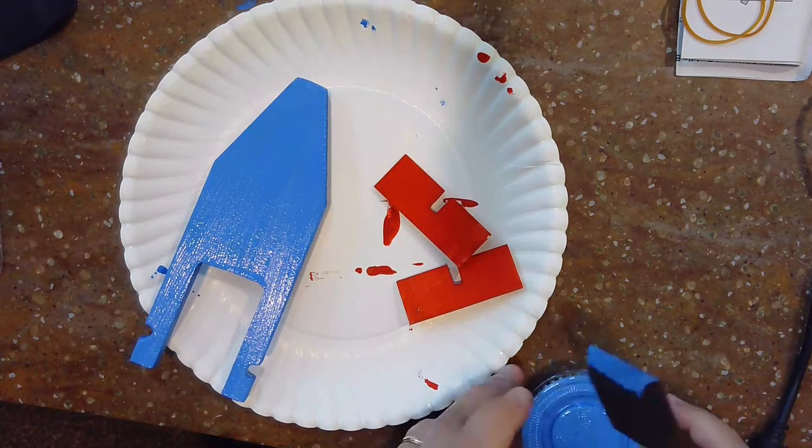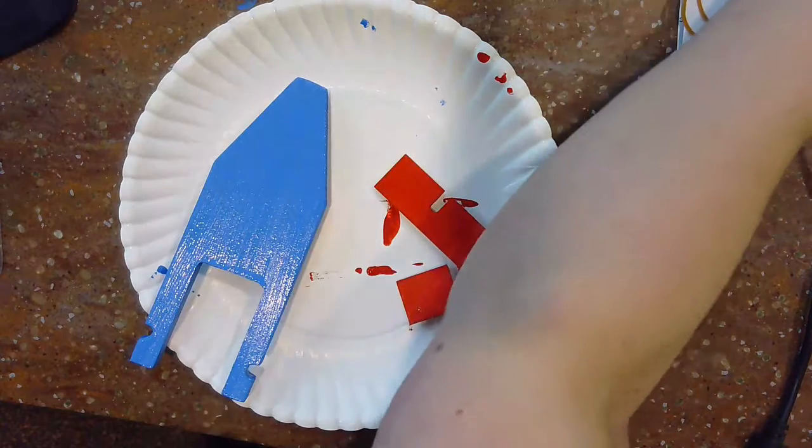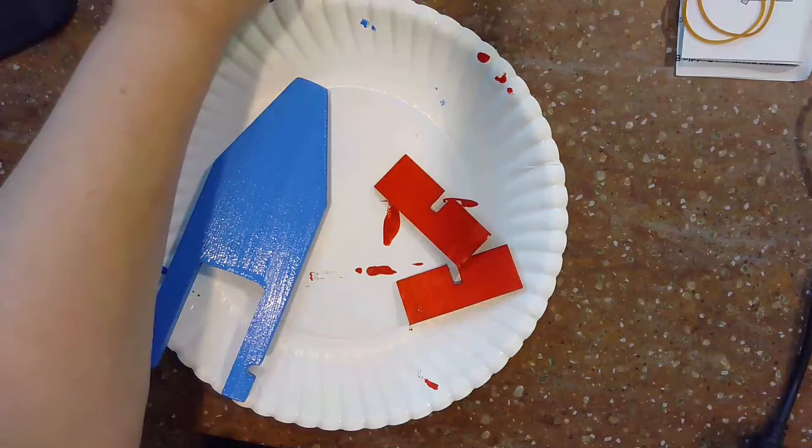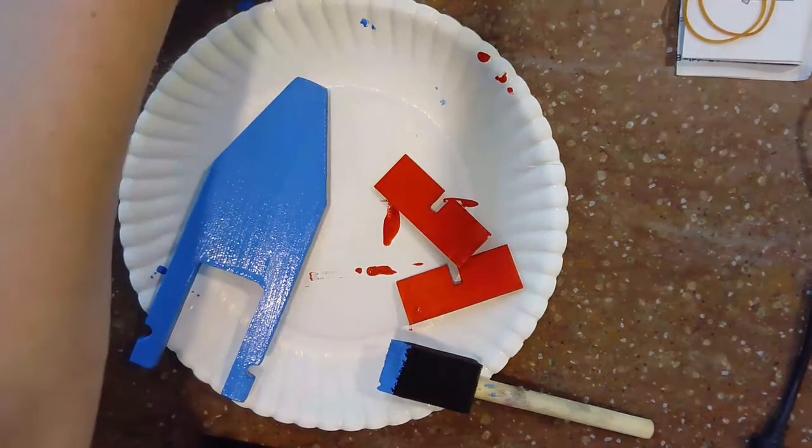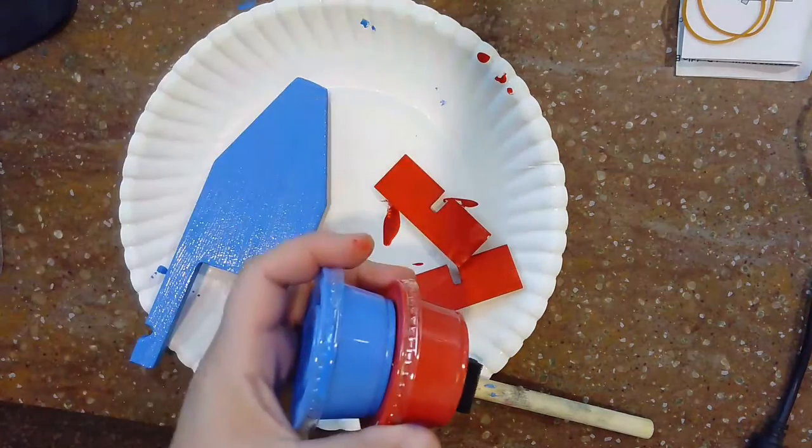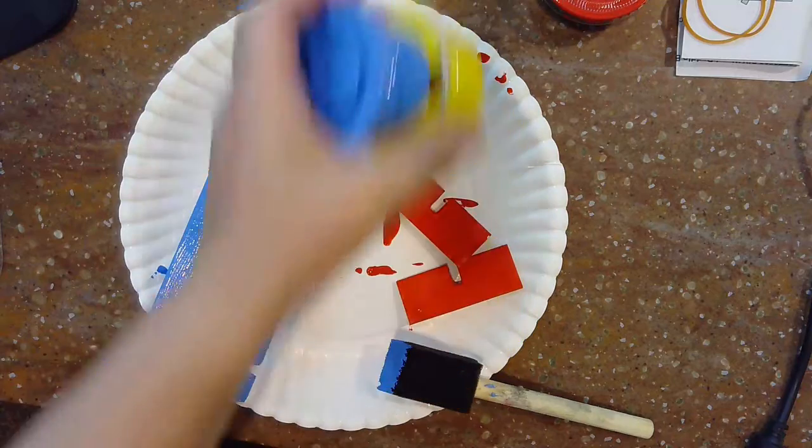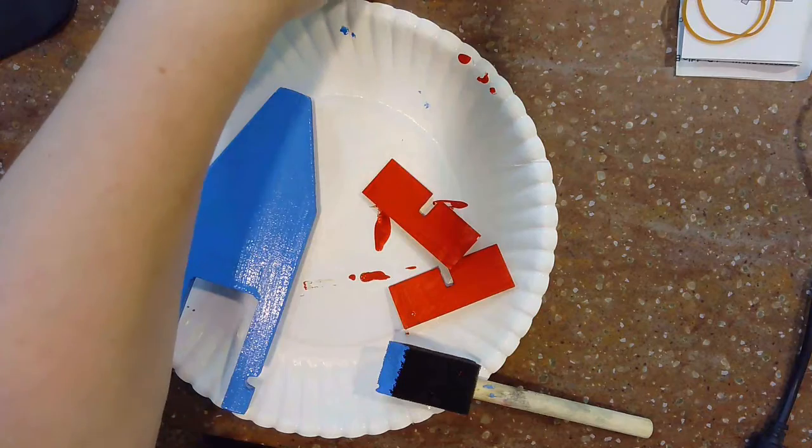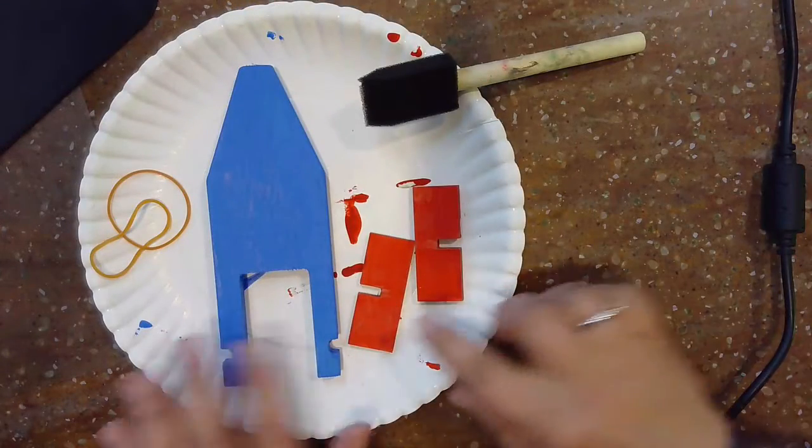All right. Now, I know that I only gave you blue, yellow, and red. But if you want a different color, remember you can always mix your colors to create new ones. You can have blue and red makes purple. Blue and yellow makes green. Yellow and red makes orange. And, of course, blue and yellow make green.